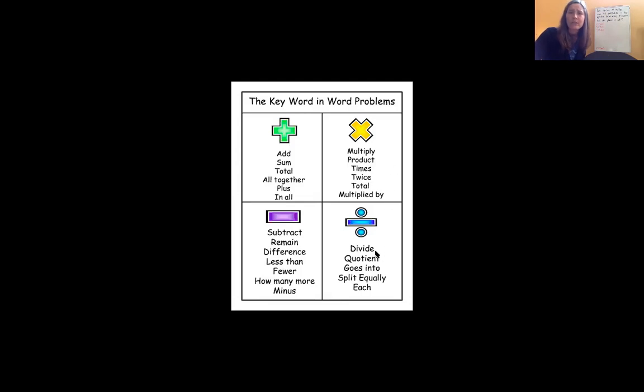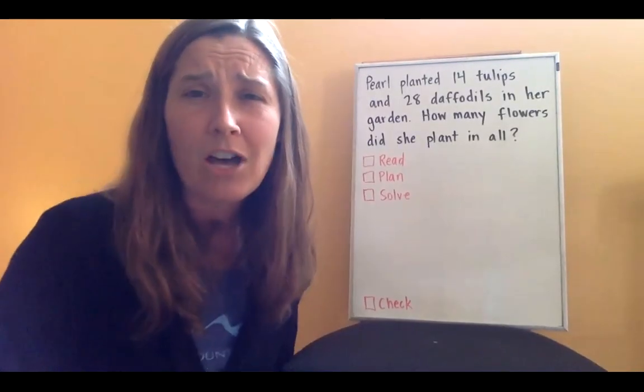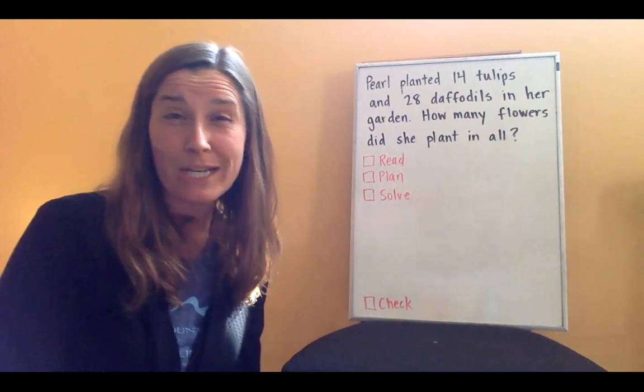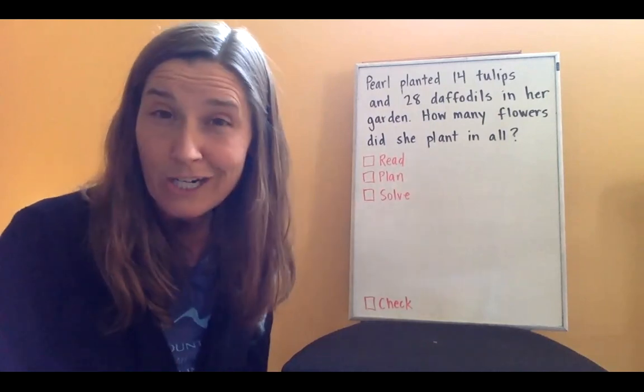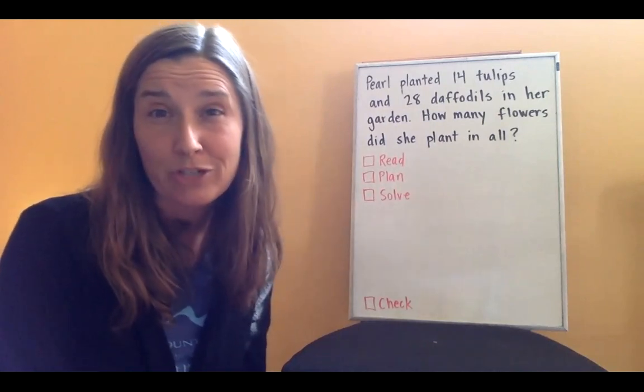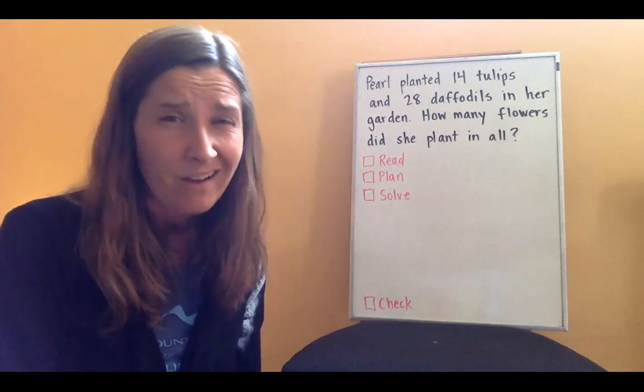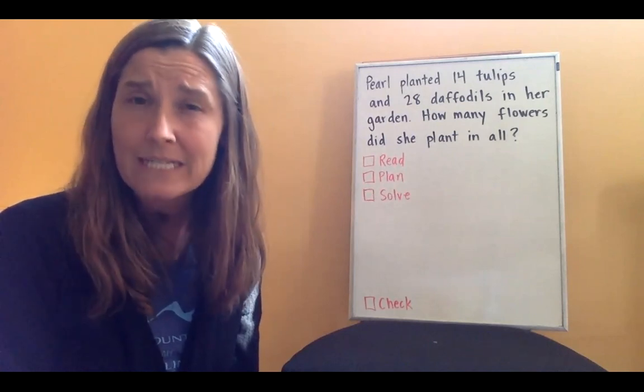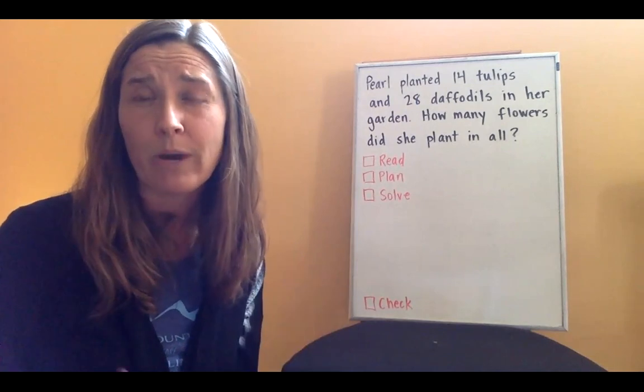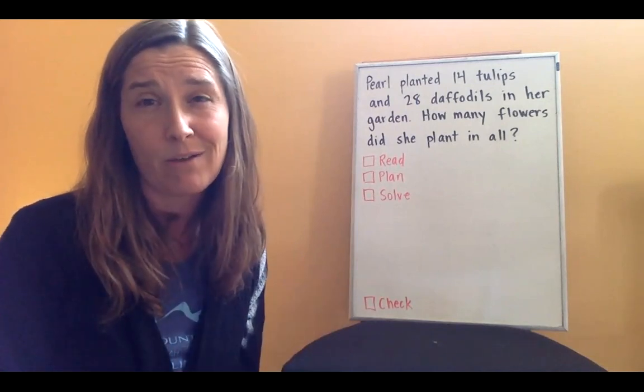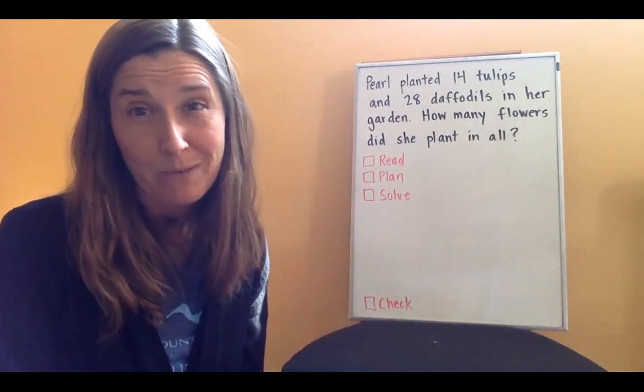Or you could see the words divide, quotient, goes into, split equally, each. And these would be words that would be the keywords to tell you to divide. So often when you're doing word problems, you might run into one keyword and that's going to help you choose which operation to use to solve your problem. Often though, as you get more advanced and you do multi-step problems that require more than one step to solve, you're going to see more than one keyword possibly.